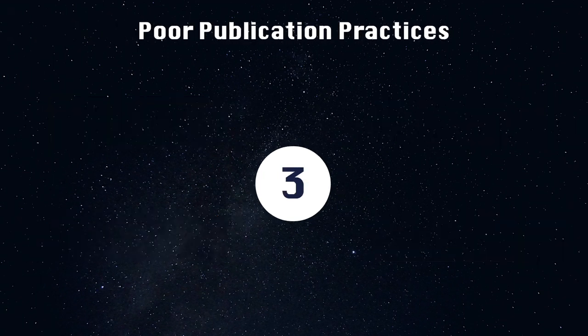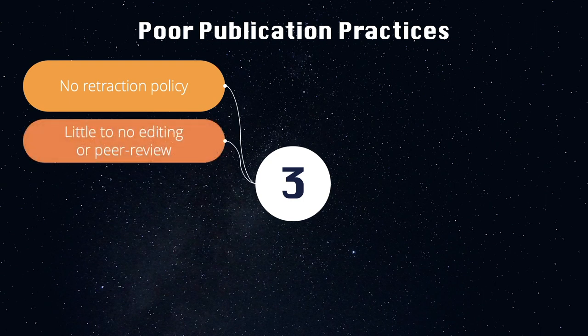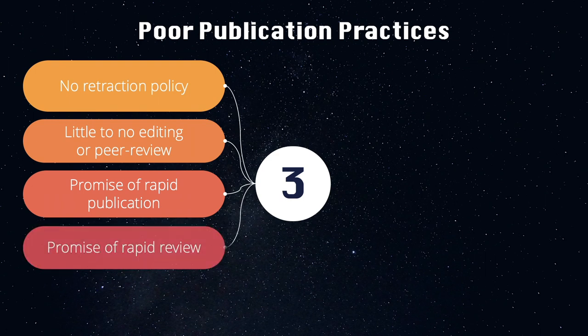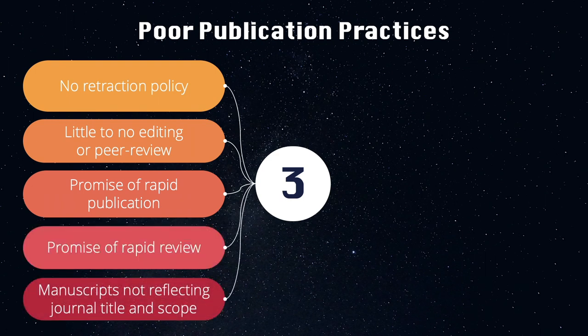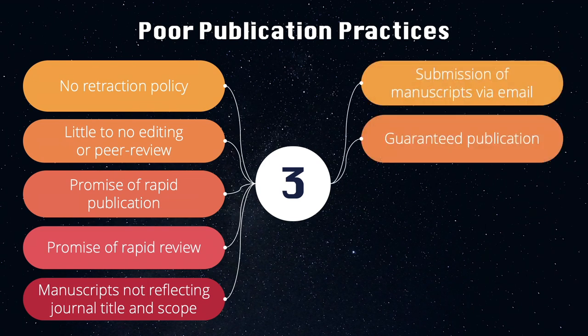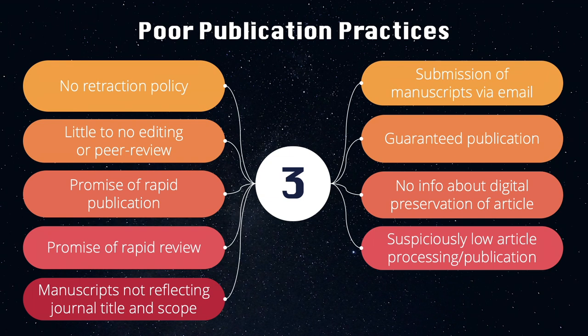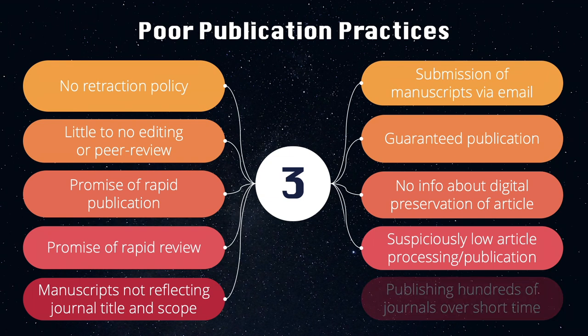The third red flag is poor publication practices, which include not having a retraction policy, little to no editing or peer review, promise of rapid publication, promise of rapid review, manuscripts not reflecting the journal title and scope, submission of manuscripts via email, guaranteed publication, no information about digital preservation of the article after publication, suspiciously low processing or publication fees — typically less than $150 — and publishing hundreds of journals over a short period of time.